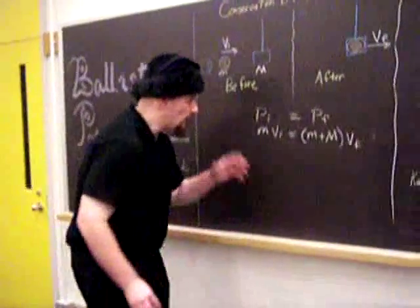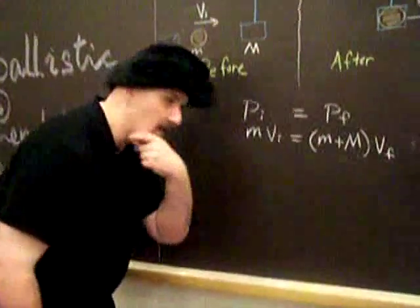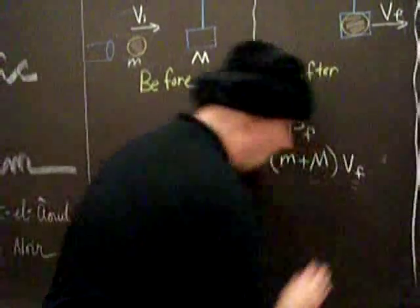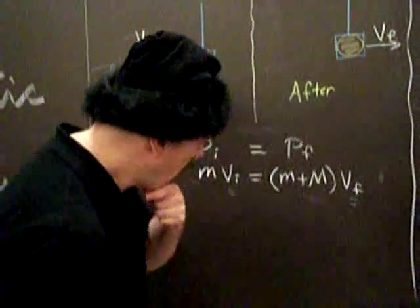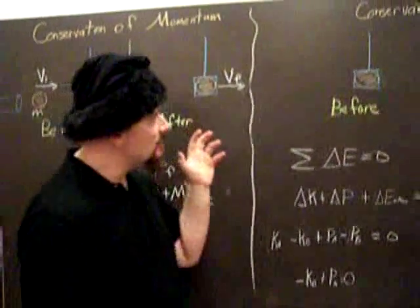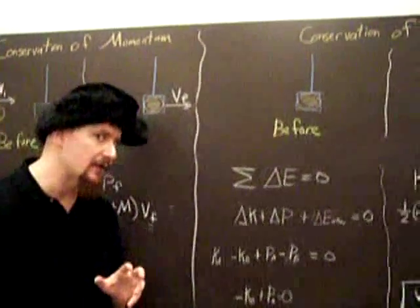Those are the two masses. So, now, what we need to find are clever ways to get v_i and v_f. Let's find v_f first. To find v_f, we want to look at the conservation of energy.